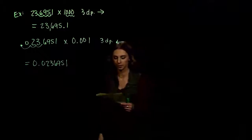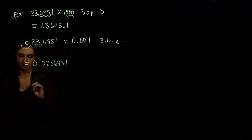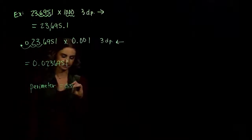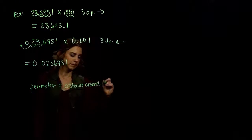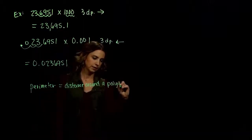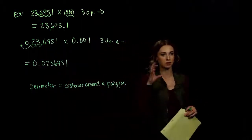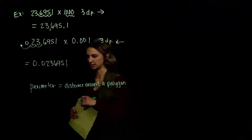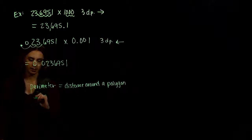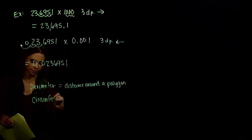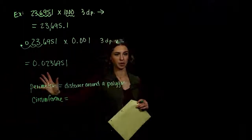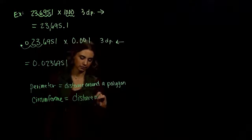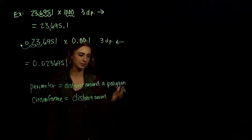We're pretty comfortable with perimeter — we've dealt with it for a while. What does it mean to be the perimeter of something? Distance all the way around. This is the distance around a polygon. A polygon is some closed shape made with straight lines, like a rectangle, a triangle, or a square. Perimeter is applied to polygons. But what about the circumference of something? Circumference is the same as perimeter, but instead of around a polygon, it's around a circle — the distance around a circle.